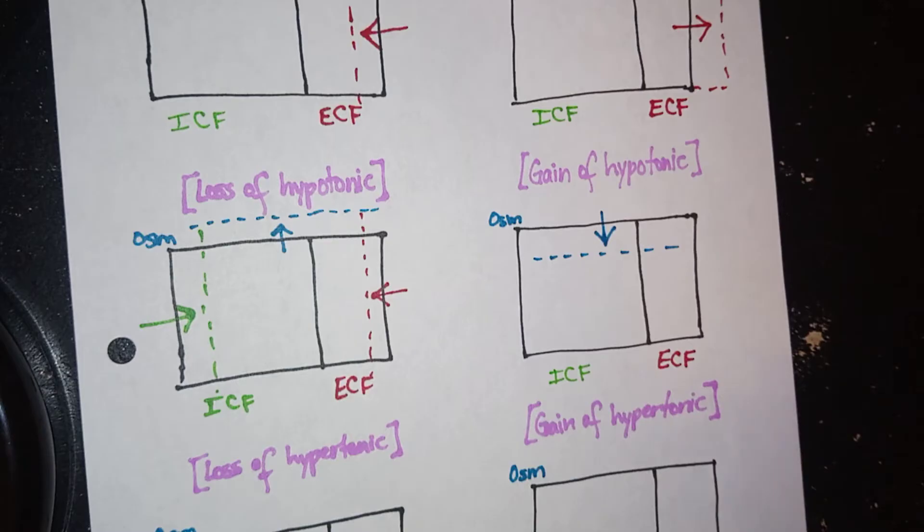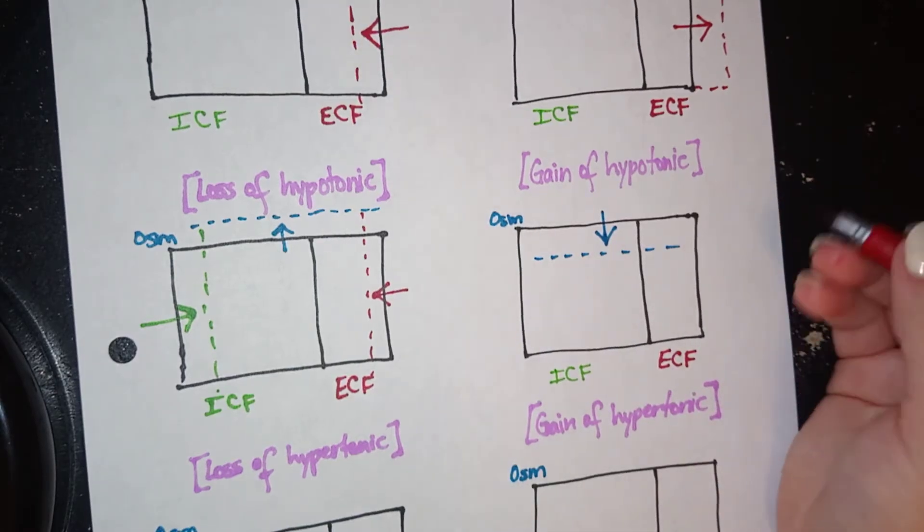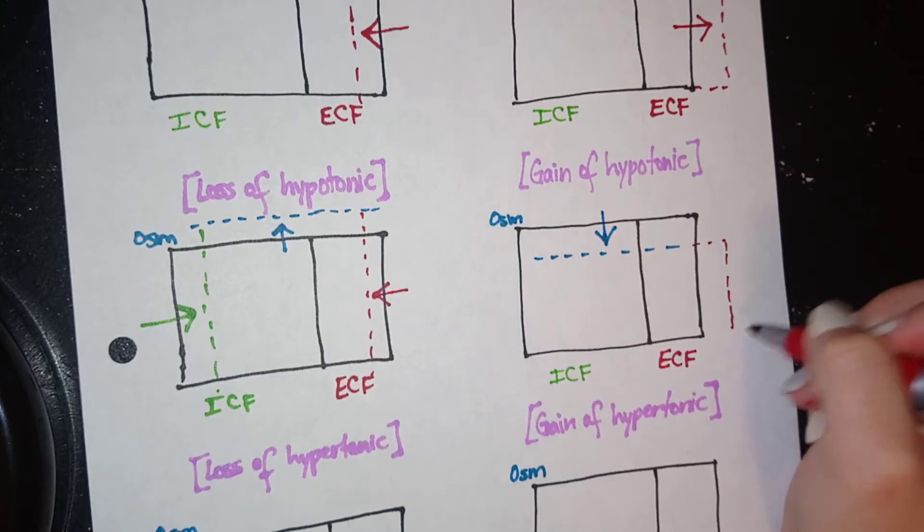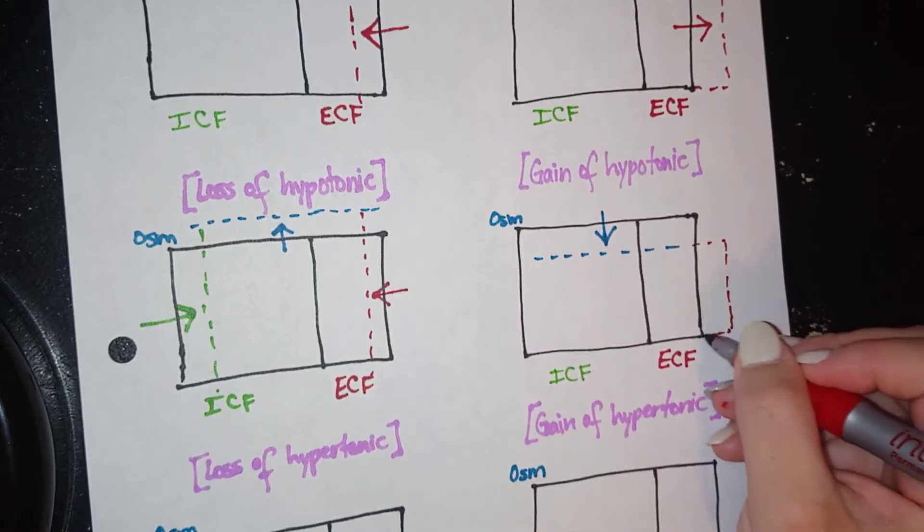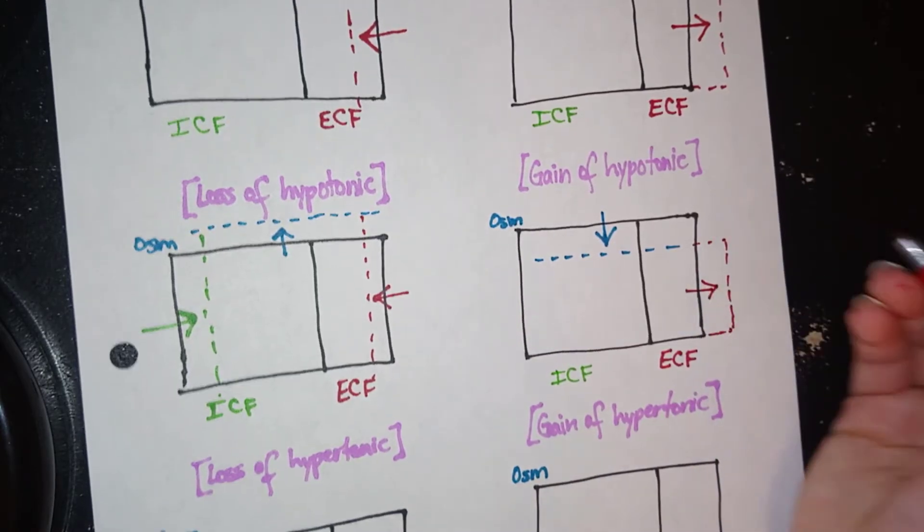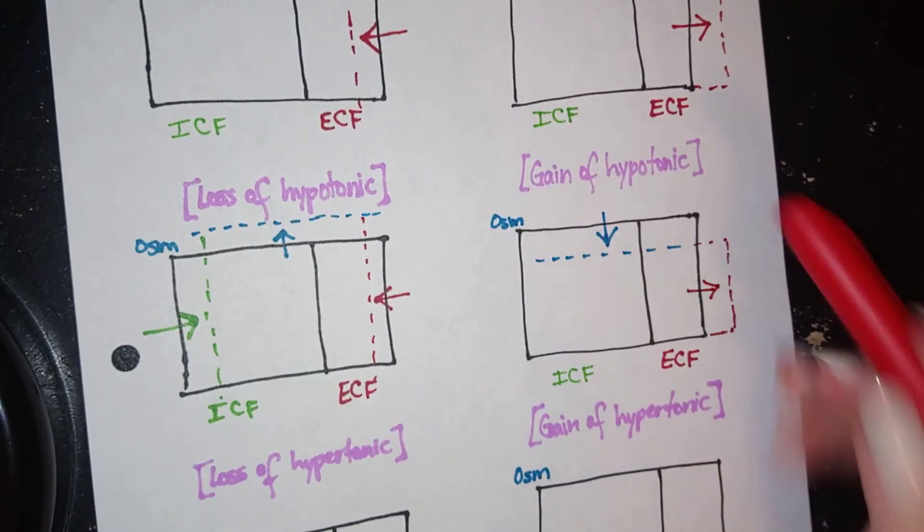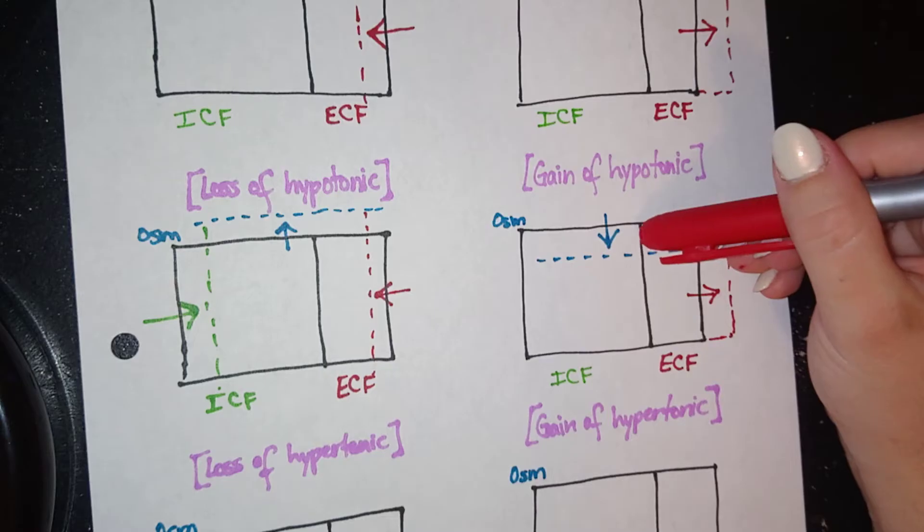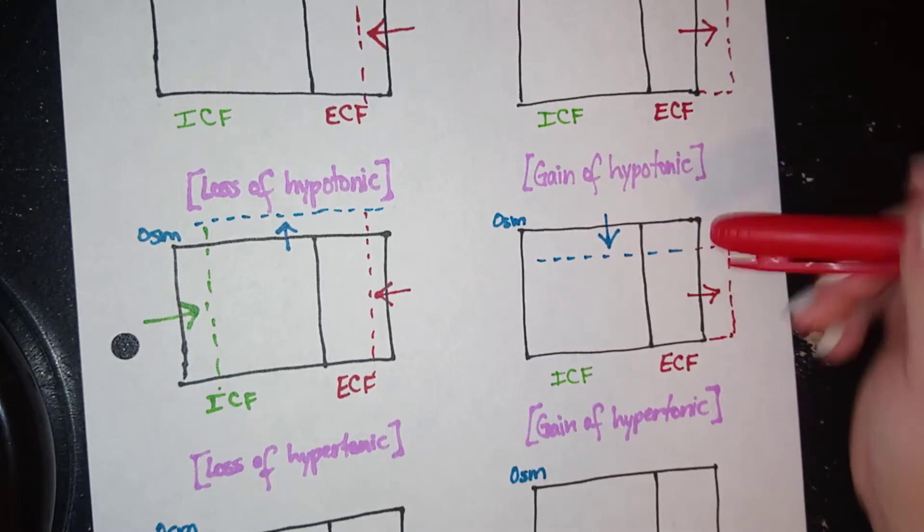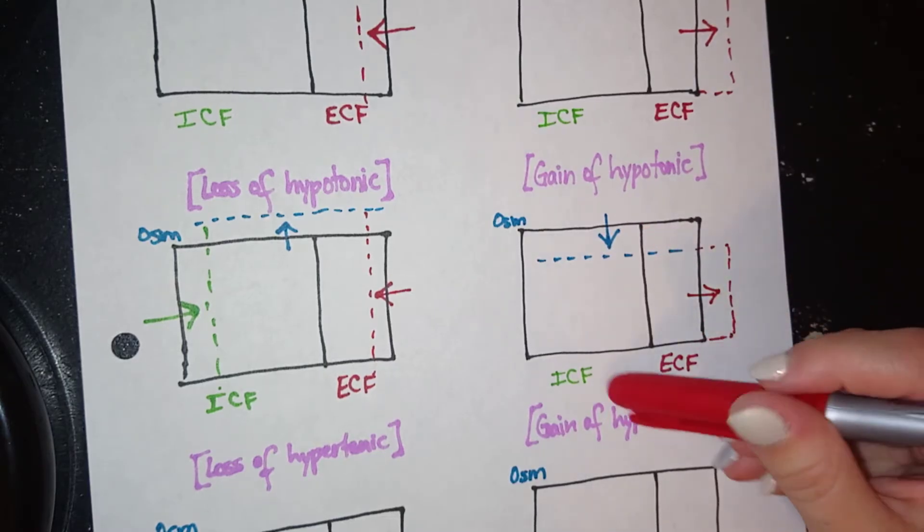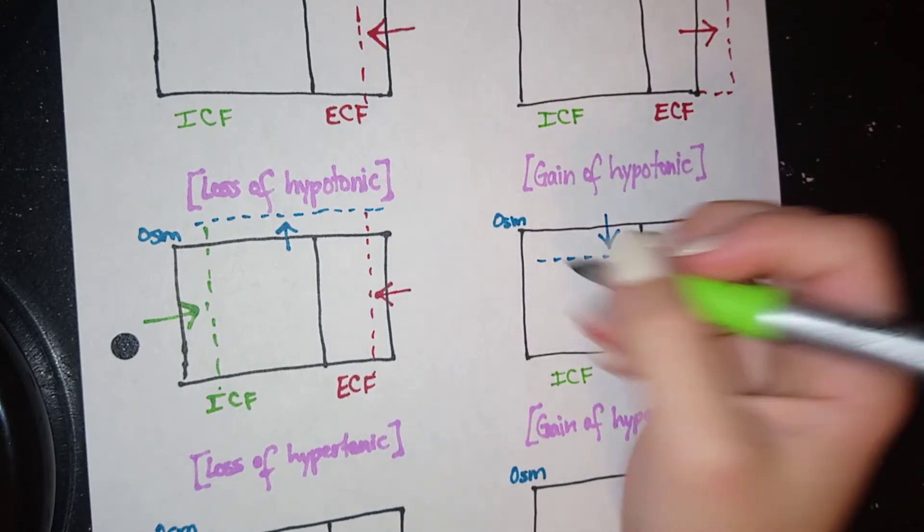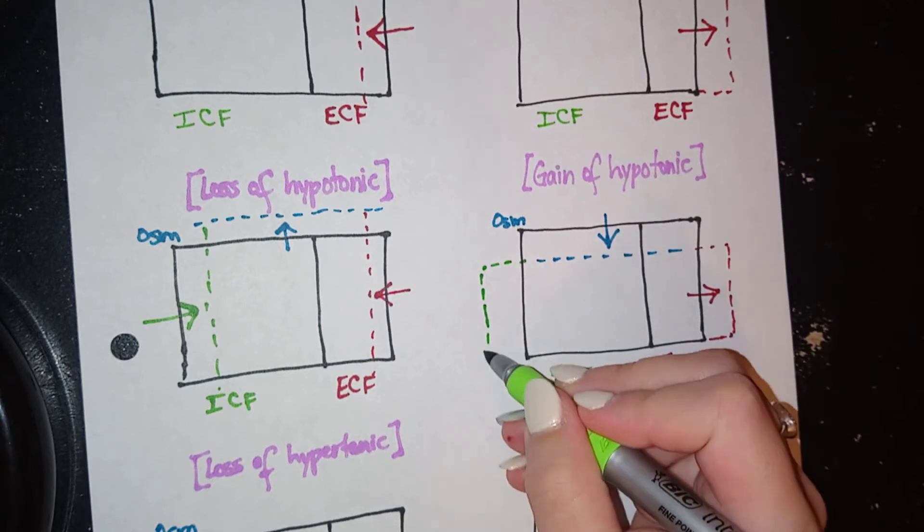And the next step would be to look at ECF. So the ECF here, since I'm gaining water, is actually going to come right out here. I have a lot of water. And since I have so much water, so little salt, the ECF is going to attempt to try and give some of that extra water to the next compartment, the ICF. So the ICF will actually increase as well.